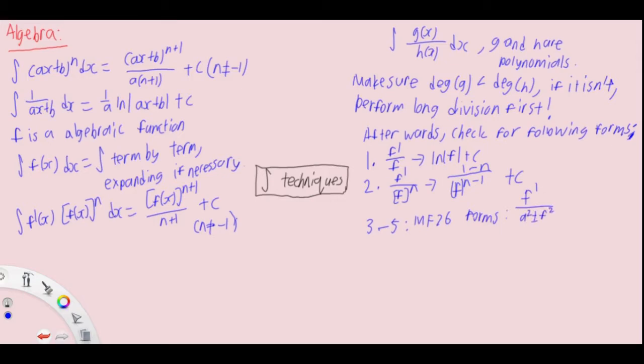These are the three fraction formulas: f' over a² plus or minus f², and f' over f² minus a². If they aren't exact, manipulate them.